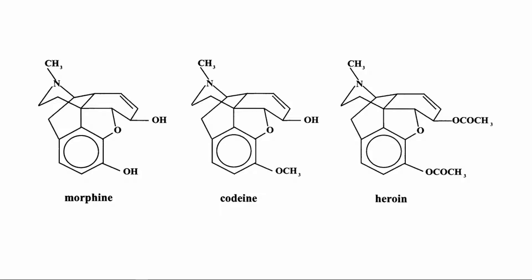Functional groups play an extremely important role in the reactivity and functionality of molecules. Just a small change in the functional group can cause very large differences in biological impact. For example, morphine has two hydroxyl groups. If we replace one with an ether group, we get codeine. If we replace the alcohol and ether with esters, we get heroin. Morphine, codeine, and heroin all have very different therapeutic properties, yet differ by only small changes in functional groups.